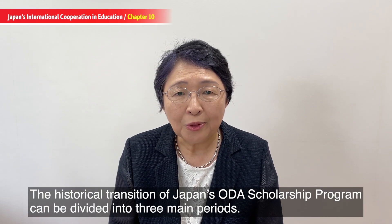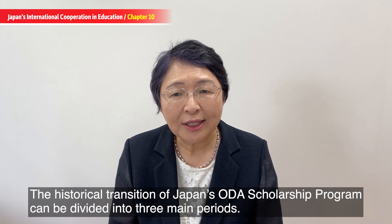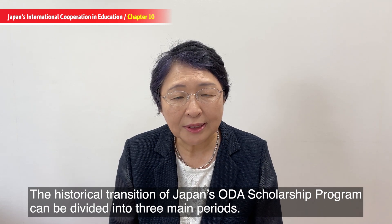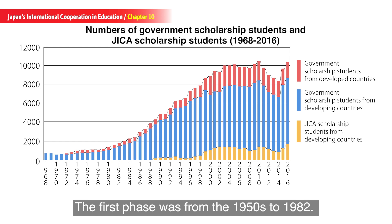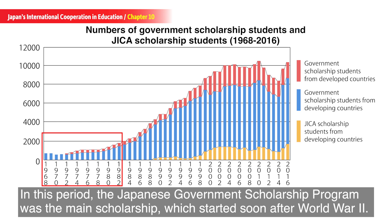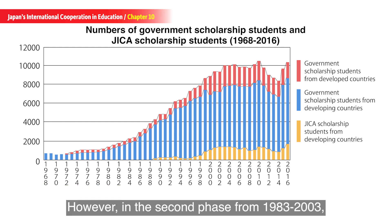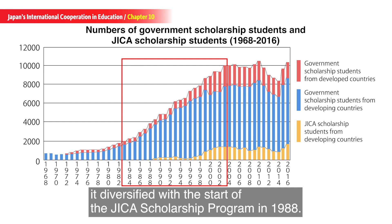The historical tradition of Japan's ODA scholarship program can be divided into three main periods. The first phase was from the 1950s to 1982, in which the Japanese Government Scholarship Program was the main scholarship, starting soon after World War II. In the second phase, from 1983 to 2003, it diversified with the start of the JICA Scholarship Program in 1988.